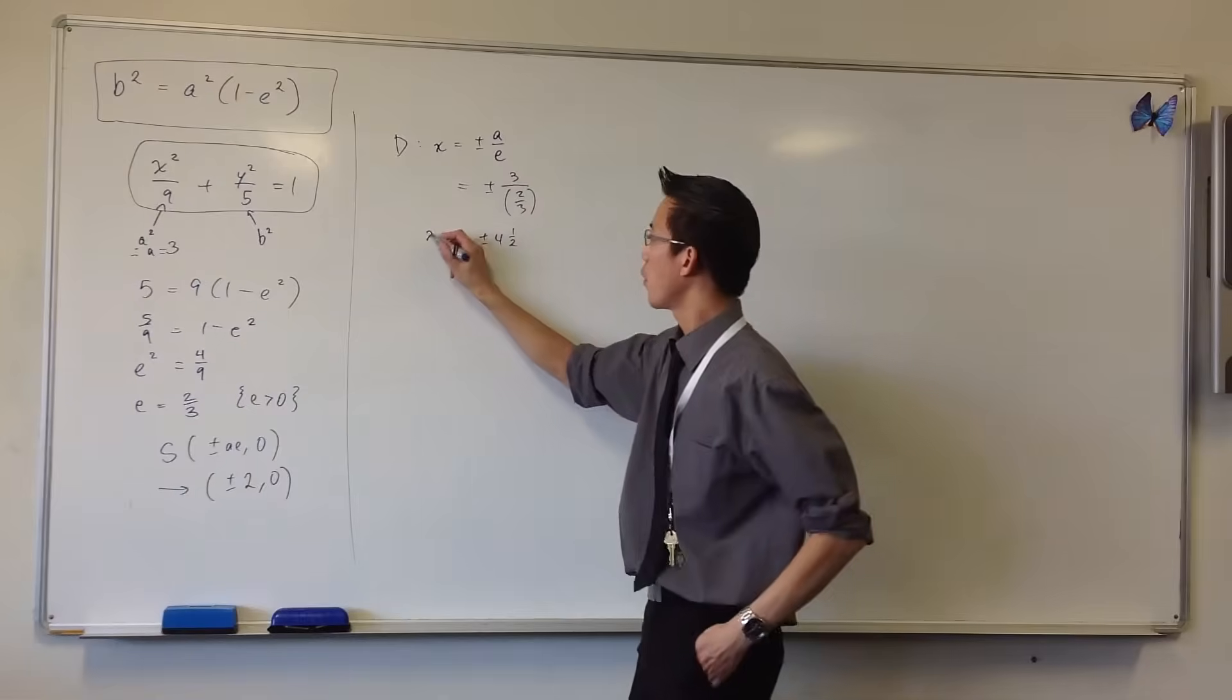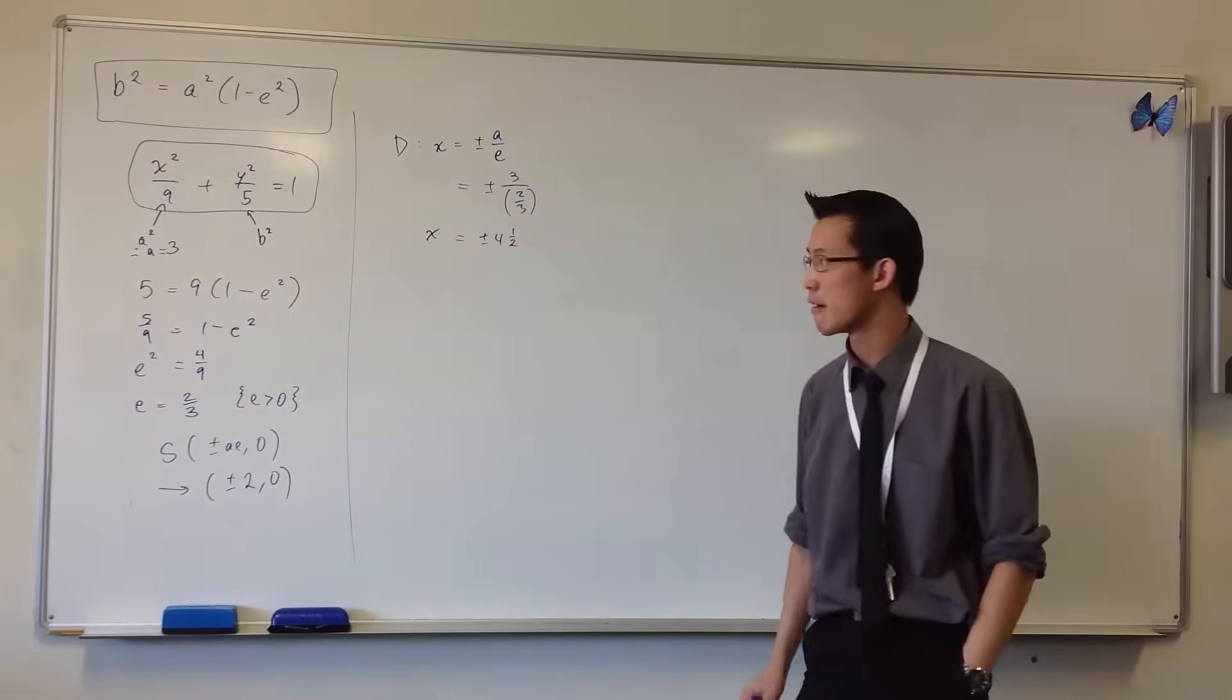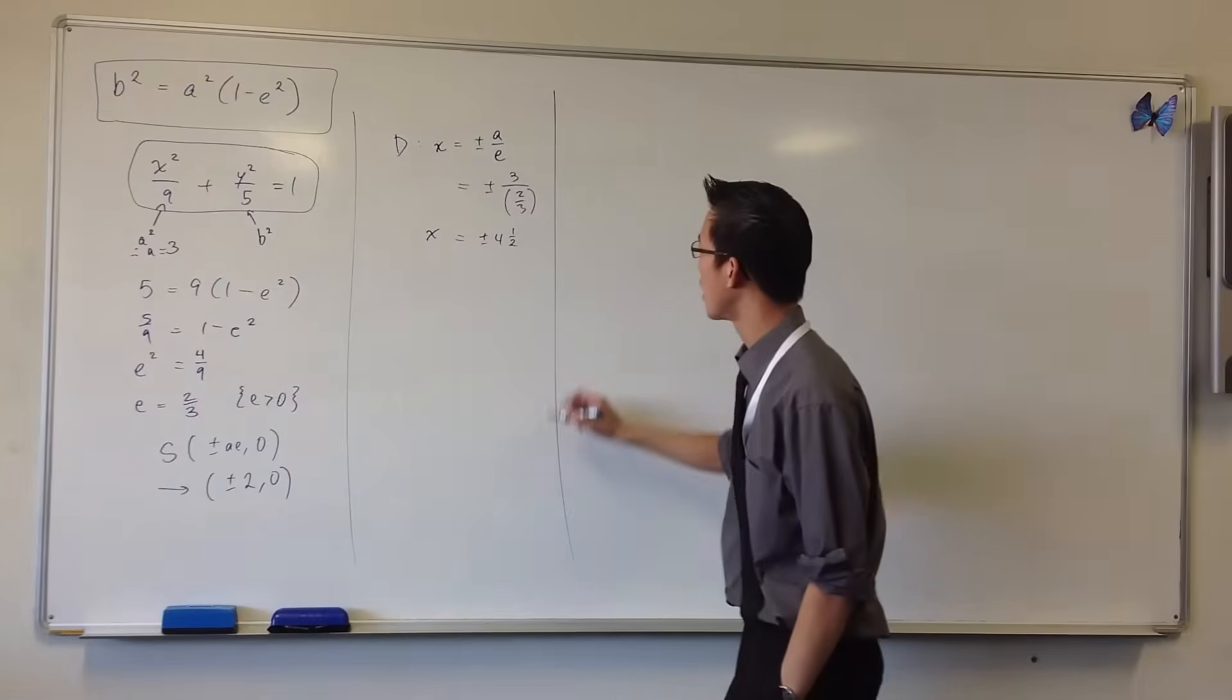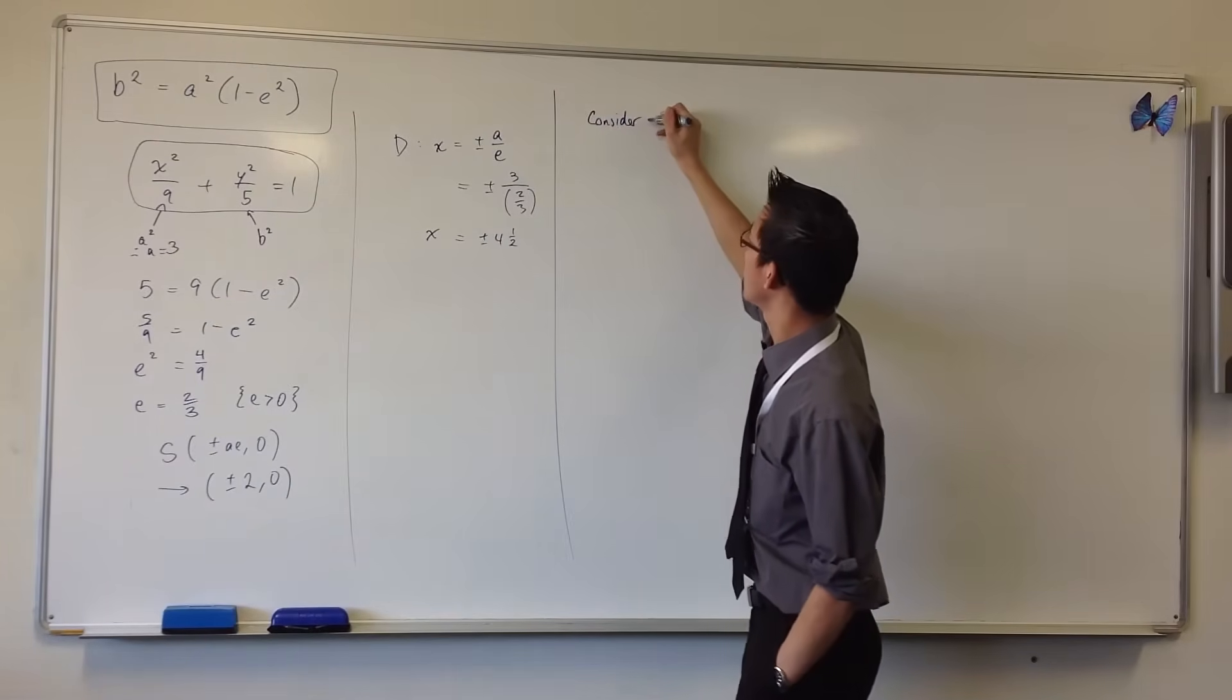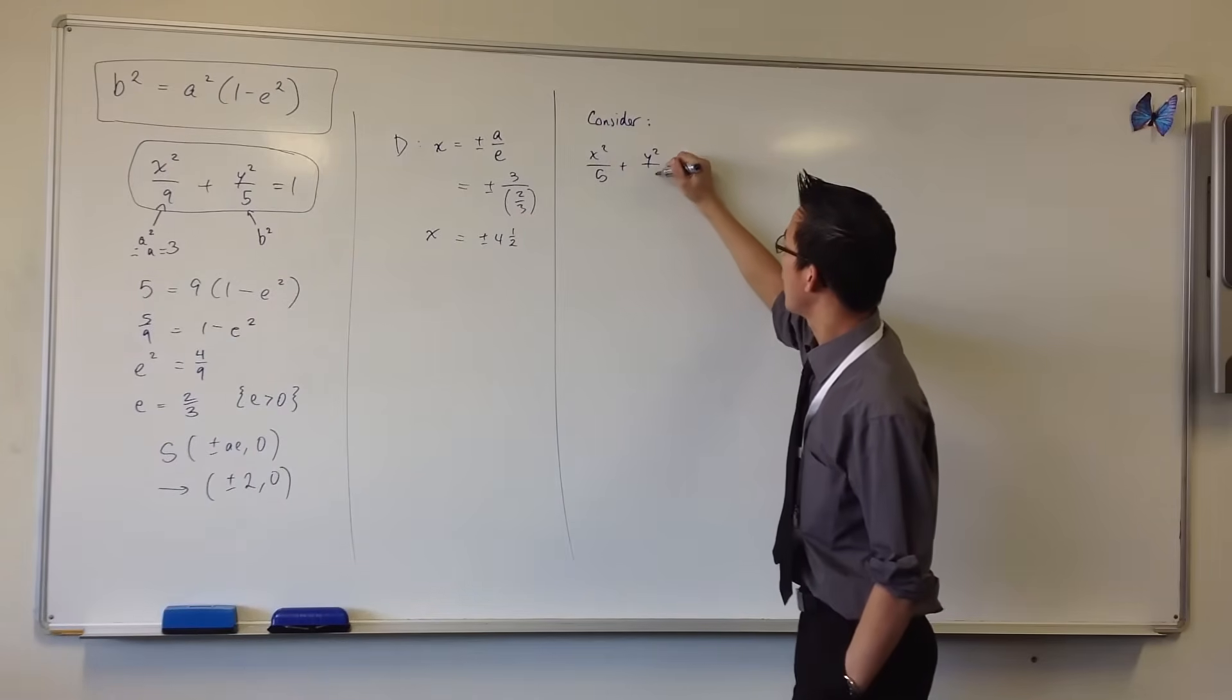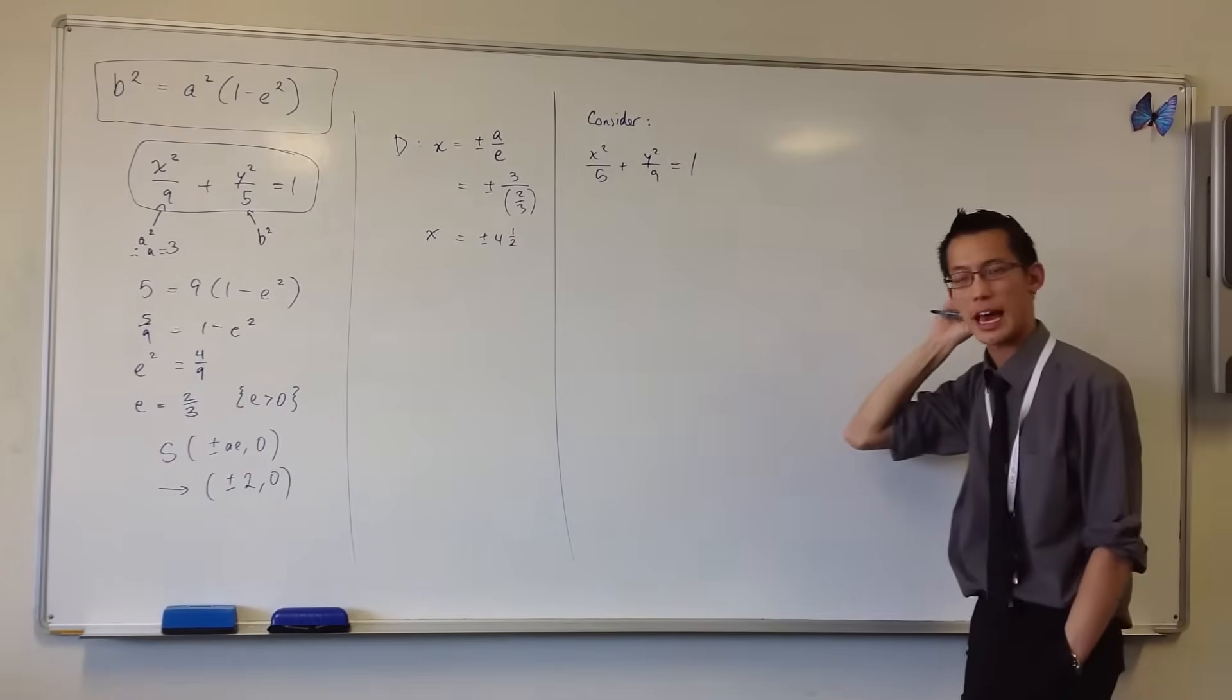Now just before we move off this, suppose I shifted it around a little bit. Let's take this ellipse. Let's consider what happens if I change the values. So if I go x² on 5, y² on 9. What's going to happen there?